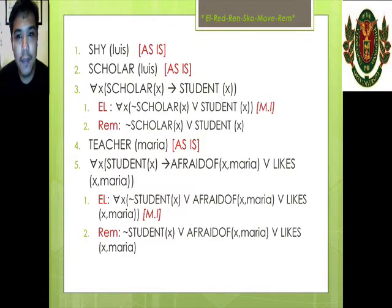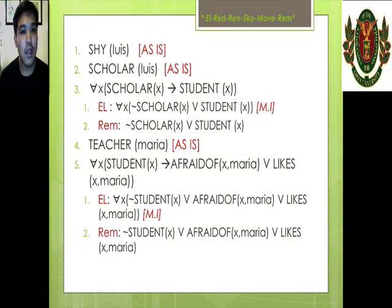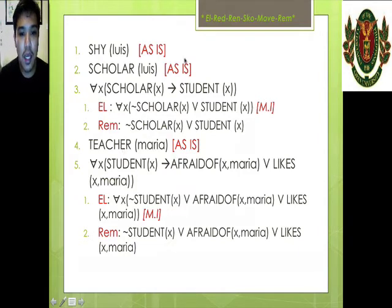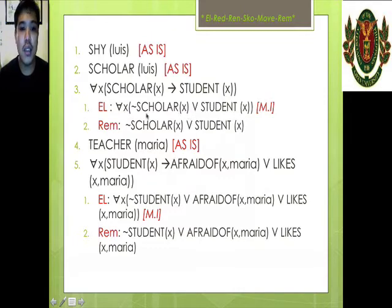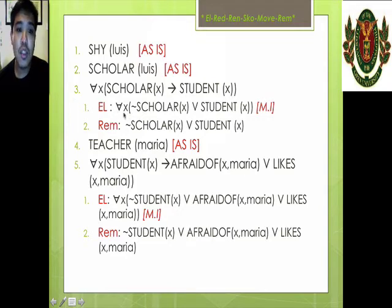Let's apply ELREDREN SCOMOVREM. For the first one — Luis is shy — we just retain it, no need to do anything. Same for Luis is a scholar — we retain it. For: for all X, if X is a scholar then X is a student, we first eliminate the implication using material implication. Now it will be: for all X, X is not a scholar or X is a student. There's no need to reduce, rename, or Skolemize — no existential quantifier. Nothing to move out. So we just remove the universal quantifier, and now this is in clausal form.